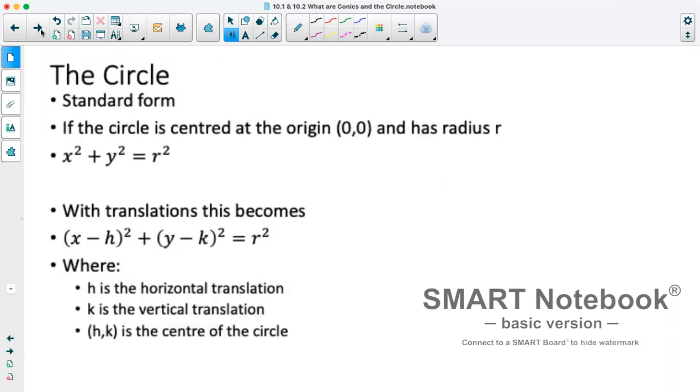So the circle in standard form is if our circle is centered at 0, 0 and has a radius of r, our equation is x squared plus y squared equals r squared.